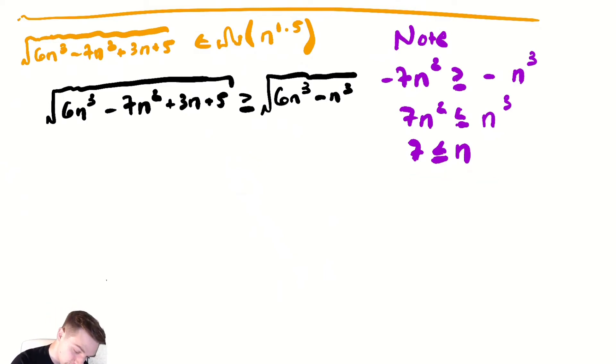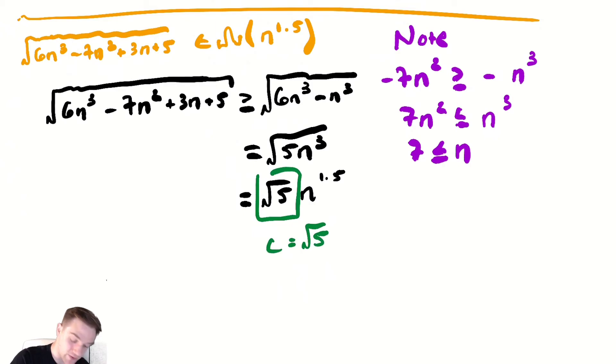So this is equal to radical 5n cubed, which is radical 5 times n to the 1.5. Here my c is radical 5 and my n sub 0 is 7 coming from my scratch work I did on the side to justify some of the inequality facts I was using.